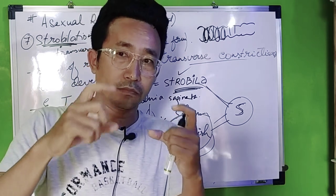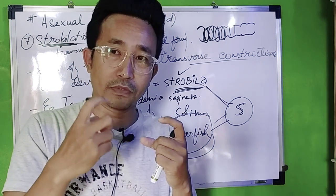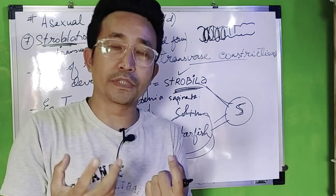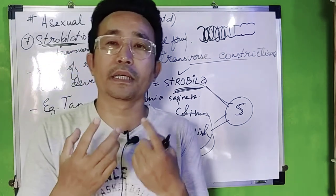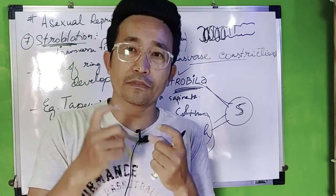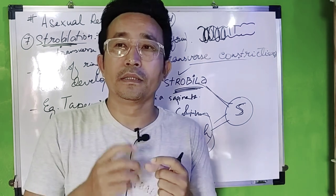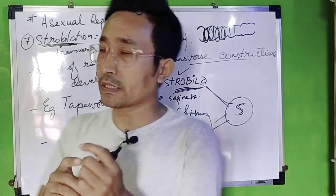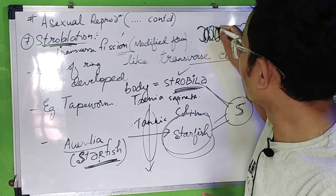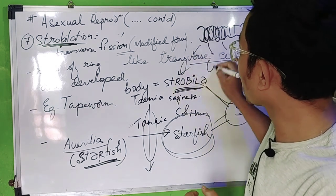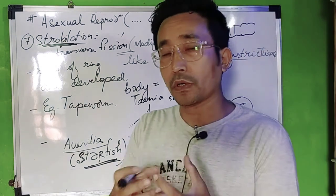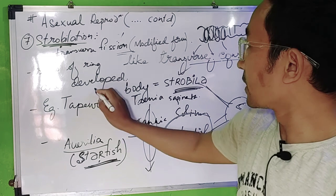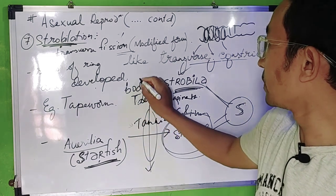Transverse constriction — this is a transverse fission. Transverse fission can enable reproduction. This is a transverse modified version, and I am talking about the construction of the larvae. Now, a series of ring-like transverse constrictions are developed by the body, and the body is strobular.